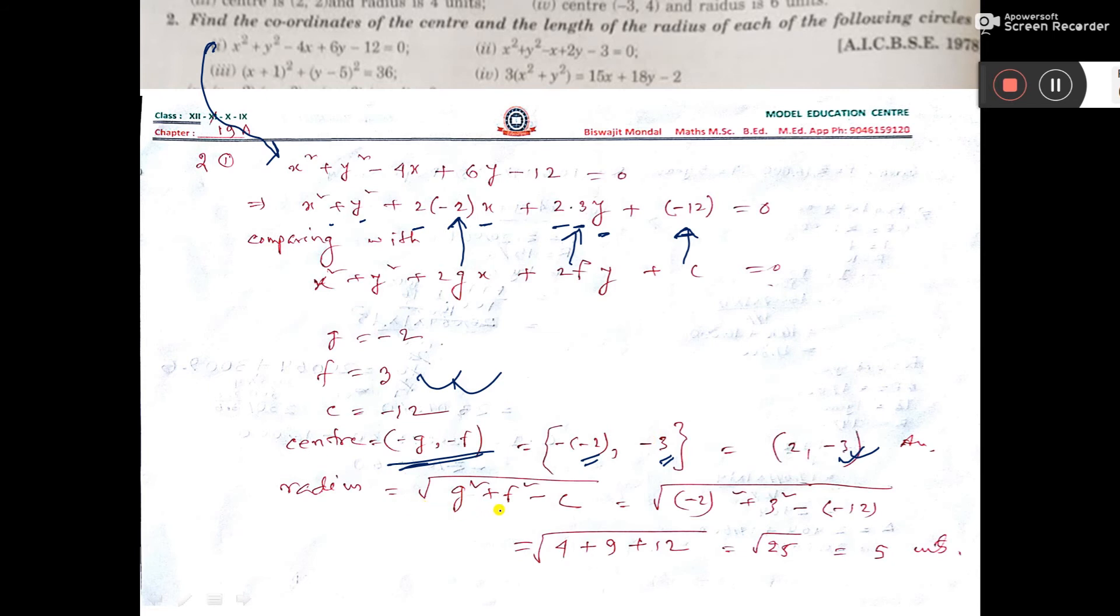And radius formula root of g square plus f square minus c. What is the value of g? Minus 2. What is the value of f? 3. What is the value of c? Minus 12.